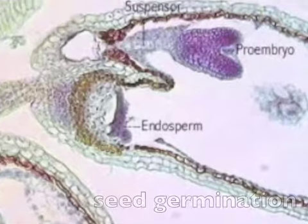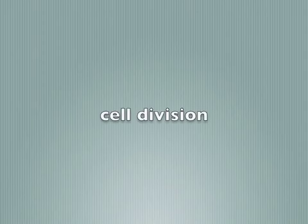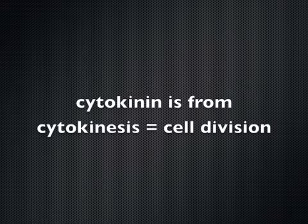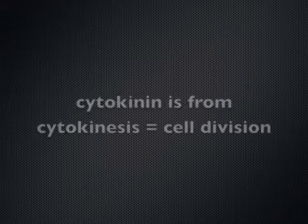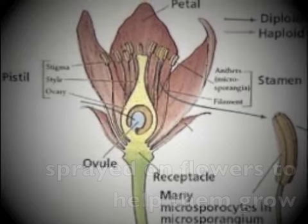Cytokinin moves nutrients around. Seed germination, cell division, spreading flowers — helps them grow.